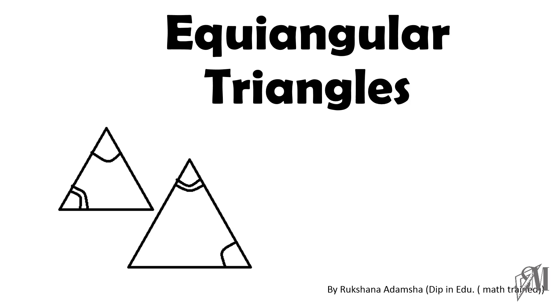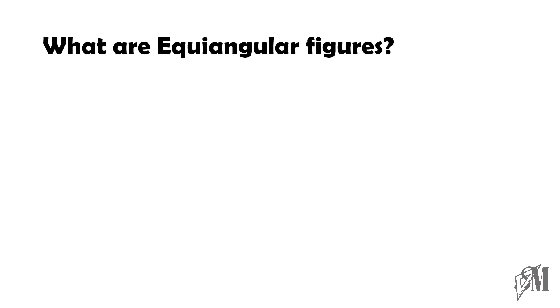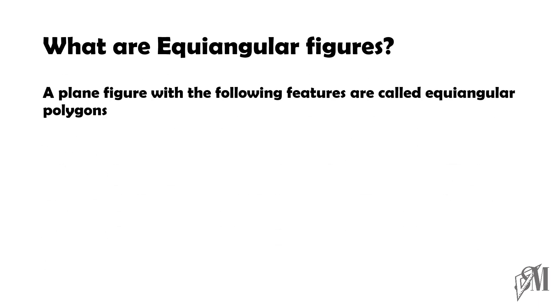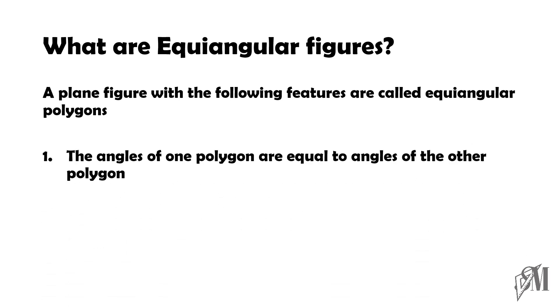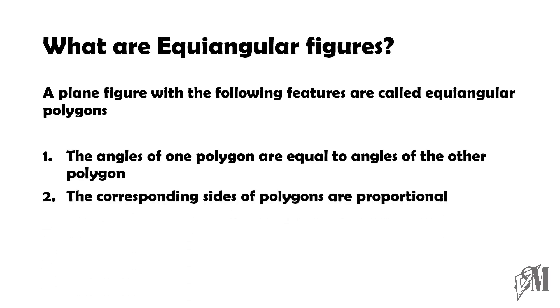First of all, let us see what are equiangular figures. A plane figure with the following features is called an equiangular polygon. The angles of one polygon must be equal to the angles of the other polygon, and the corresponding sides of the polygons must be proportional. If two plane figures satisfy these conditions, the two figures are said to be equiangular.